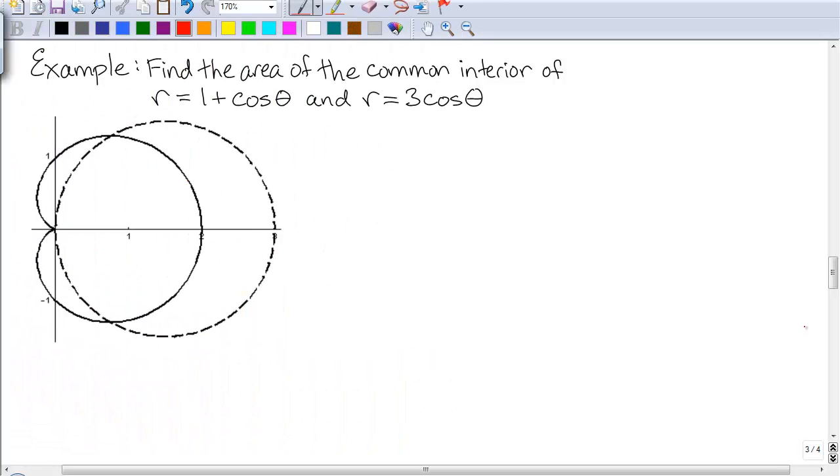In this example, we want to find the area of the common interior of r equals 1 plus cosine theta and r equals 3 cosine theta. r equals 1 plus cosine theta is the cardioid curve represented by the solid line here, and r equals 3 cosine theta is the circle represented with the dashed line here.